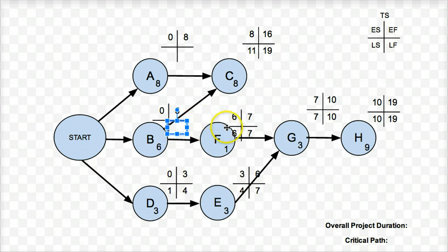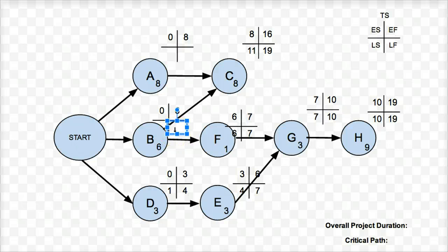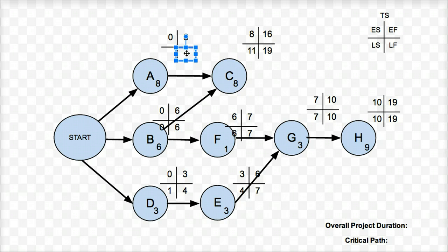Looking at B: B is leading into two different tasks, so I have a choice of two different late starts — the late start from F, which is six, and the late start from C, which is eleven. On the second pass going from right to left, I always pick the lowest one, because I have to get B finished by day six to allow F to start at day six and still keep the overall project duration on time. So I take six; six minus six is zero. Moving on to A: I have to get A finished by day eleven to allow C to start at day eleven, and eleven minus eight is three.